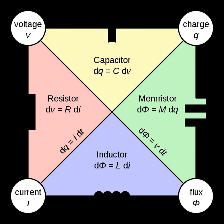All the above are two-terminal, or one-port, elements with the exception of the dependent sources. There are two lossless, passive, linear two-port elements that are normally introduced into network analysis. Their constitutive relations in matrix notation are given for the transformer and the gyrator.